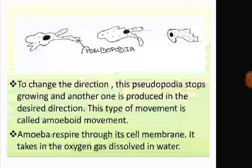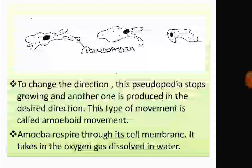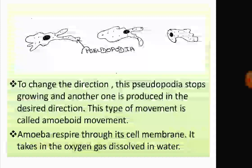To change direction, one pseudopodium stops growing and another is produced in the desired direction. The rest of the pseudopodia stop growing. This type of movement is called amoeboid movement. Amoeba performs respiration through its cell membrane, also called the plasma membrane.